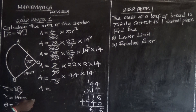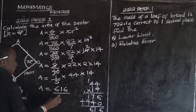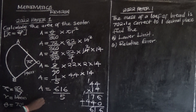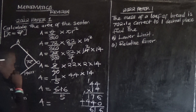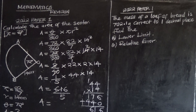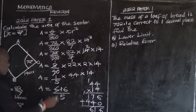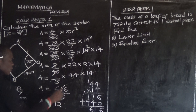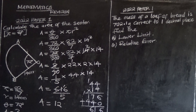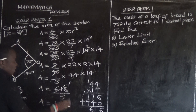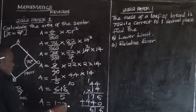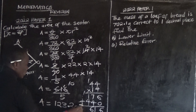So we have 616 over 5. Now divide: 5 into 6 is 1 remainder 1; 5 into 16 is 3 remainder 1; 5 into 11 is 2 remainder 1; bring down a zero — 5 into 10 is 2. The area equals 123.2 centimeters squared.